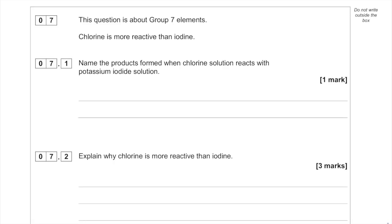This question is about Group 7 elements. Chlorine is more reactive than iodine. Name the products formed when chlorine solution reacts with potassium iodide solution. Because chlorine is more reactive, it displaces the iodine to become potassium chloride plus iodine. So we have potassium chloride and iodine.